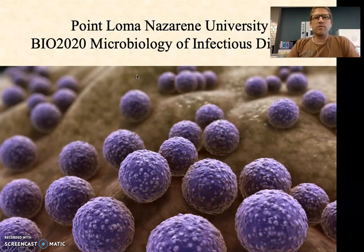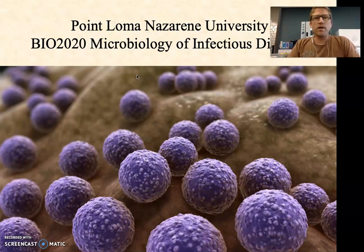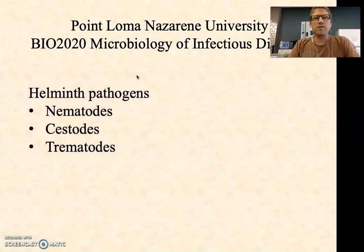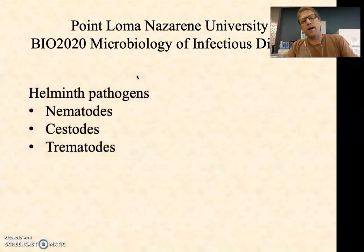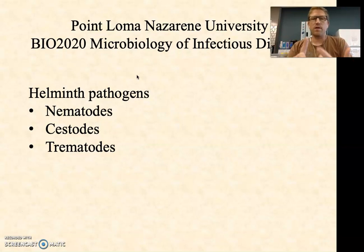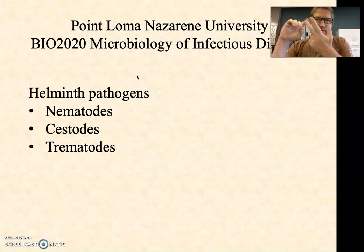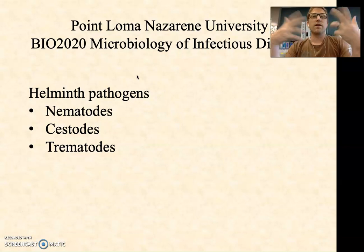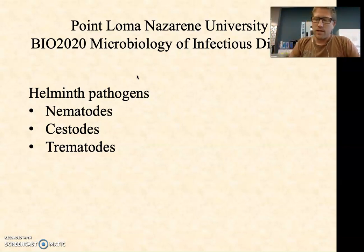Welcome back everybody to Microbiology of Infectious Diseases. We've been talking about eukaryotic pathogens and I'm going to talk about the last group, the helminths, which are pathogenic worms. In particular we're going to talk about the nematodes, the cestodes and the trematodes, and we're going to give them also their common names.